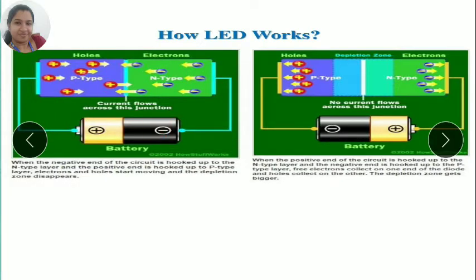Forward biasing means the P region is connected to the positive terminal of the battery and the N region is connected to the negative terminal.